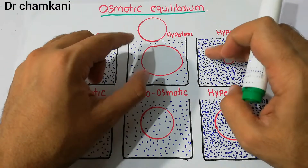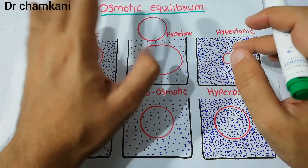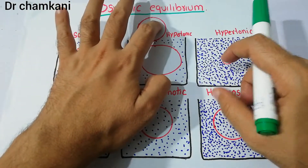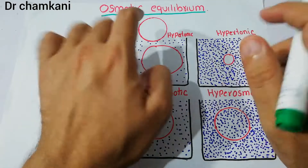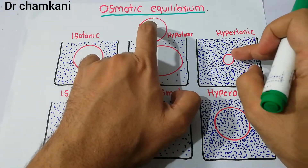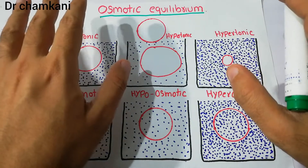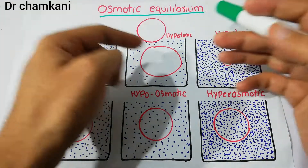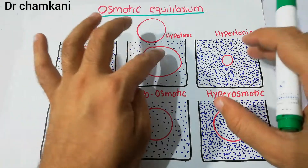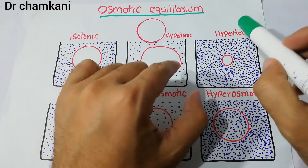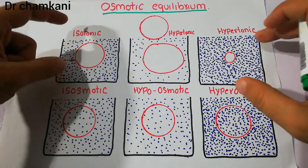In hypertonic fluid, if a cell is placed in a hypertonic fluid, the concentration of this fluid is higher than the concentration of fluid inside the cell. The concentration of water inside the cell is higher than in this fluid, so water moves from high concentration to low concentration - water from the cell starts leaving into the fluid and the cell shrinks. So in isotonic fluid neither water enters nor leaves; in hypotonic fluid water enters and the cell swells; in hypertonic fluid water leaves and the cell shrinks.